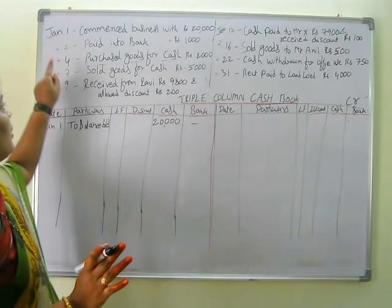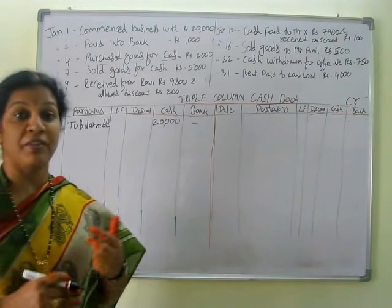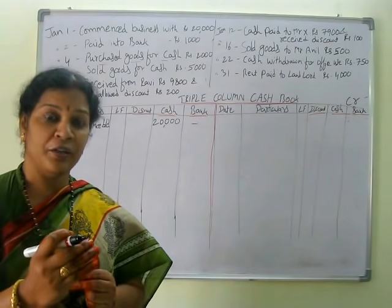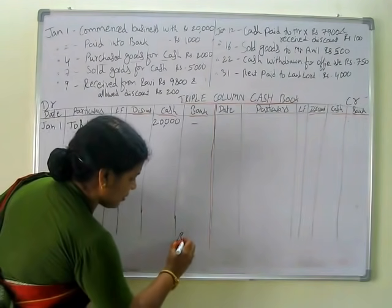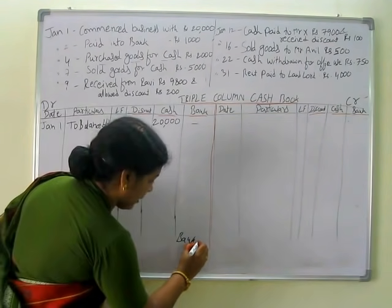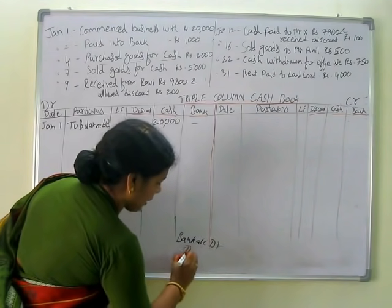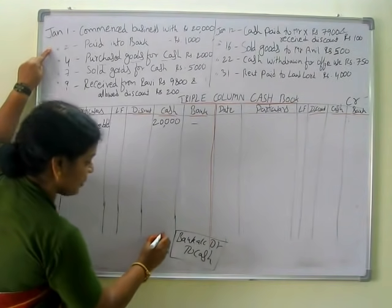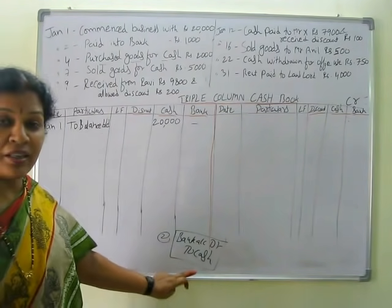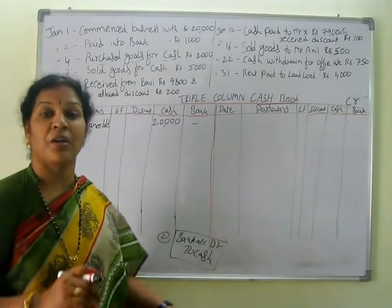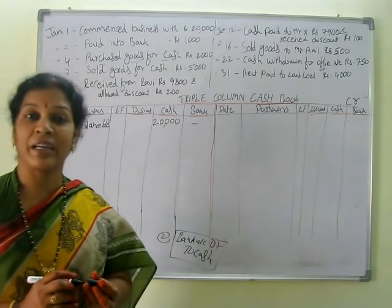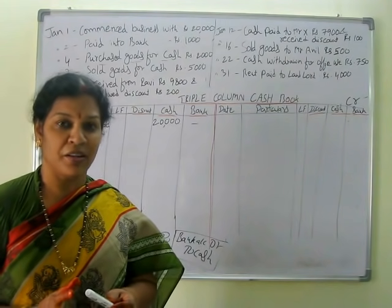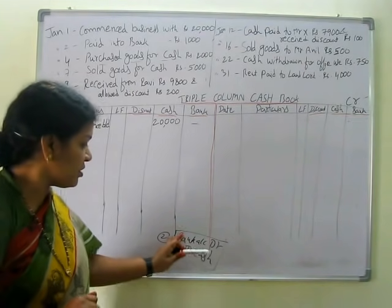We are not writing anything in the bank column — this is not a bank transaction. The second transaction: paid into bank. We are paying into bank, so bank is the receiver. Debit the receiver — bank account debit to cash account. This is the journal entry of the January 2nd transaction. Whenever in any transaction bank and cash together appear in one entry, that will be called a contra entry. Contra means bank and cash together in one entry.